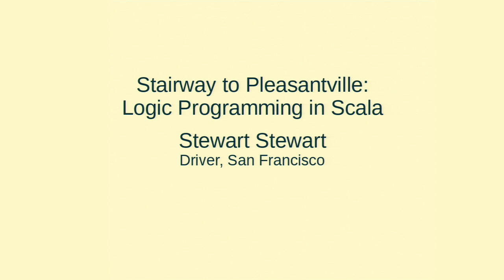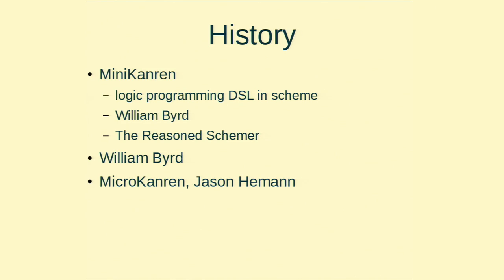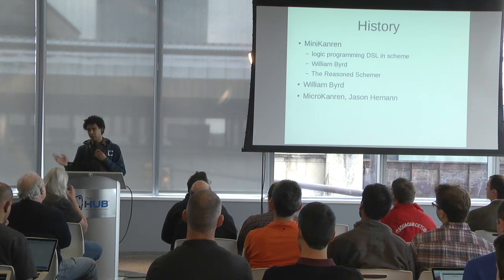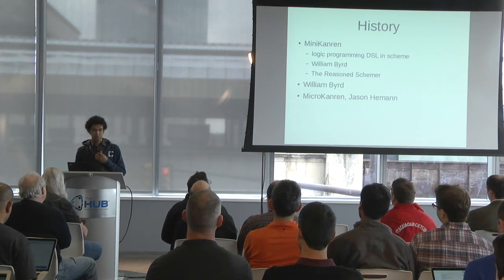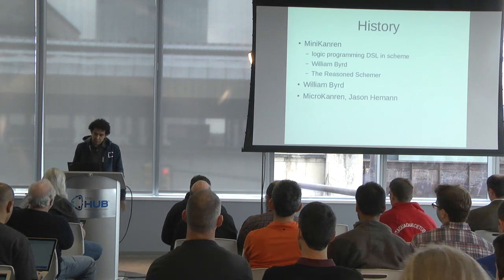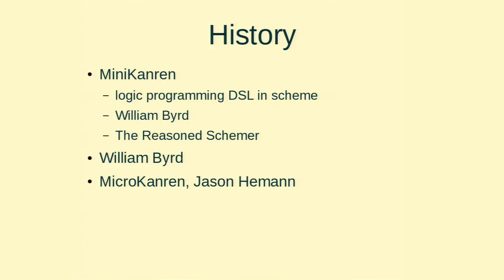This is all based on MiniKanren, which, if you haven't heard of it, is a logic programming DSL written by William Byrd. It's embedded in Scheme. The nice thing about it is it has a small, purely functional core, so it's very easy to just port over to different languages. There are many ports of it — if you look on GitHub, you could find three other ports in Scala. Specifically, I learned this from the book The Reasoned Schemer, and my implementation is based on the paper by Jason Heeman on MicroKanren, which is an even smaller core.